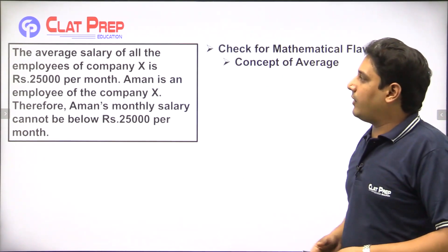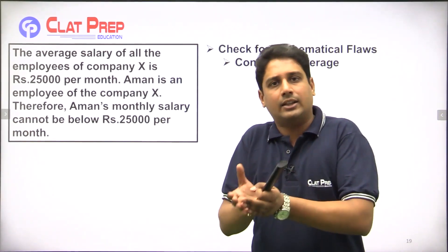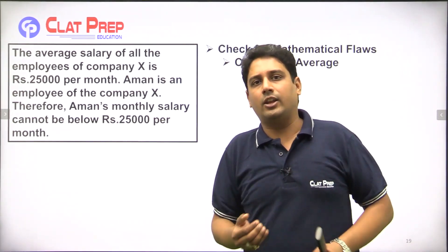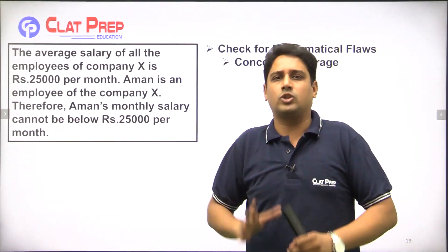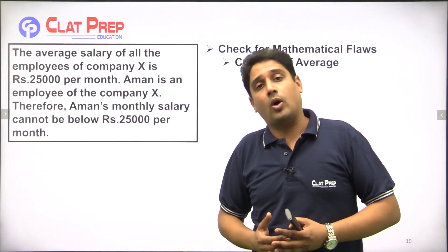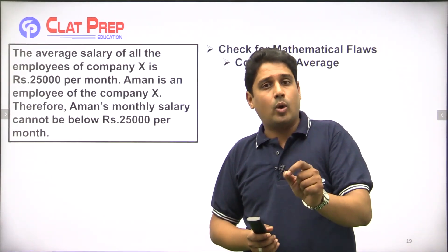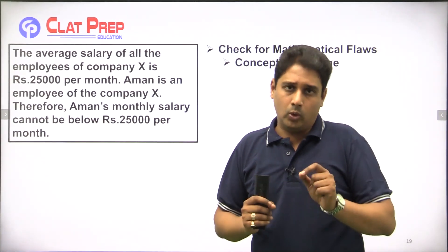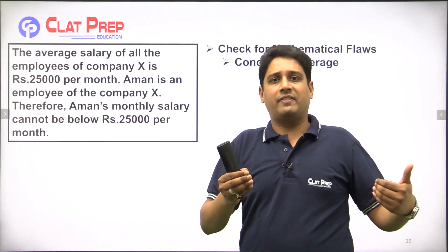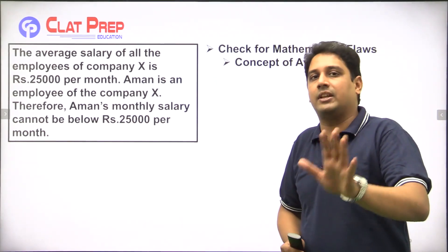The argument says: the average salary of all the employees of Company X is rupees 25,000 per month. To calculate an average, you add all the observations and divide by the number of observations. So the average salary of all employees is 25,000 per month. Can I say that every employee's salary is exactly 25,000? No — some of them are earning above 25,000, some below 25,000, and some might earn exactly 25,000, but on average it is 25,000.